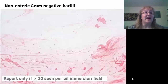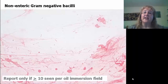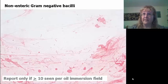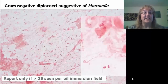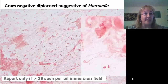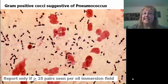Also, the non-enteric-like gram-negative bacilli — these are the longer, thinner, sometimes hot dog-shaped gram-negative bacilli. Again, we would only report them if there were at least 10 per oil immersion field. Here we see gram-negative diplococci that are suggestive of Moraxella. In order to report them, we would need to see at least 25 organisms per oil immersion field.